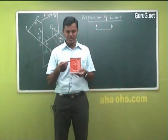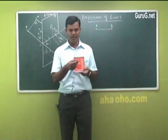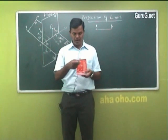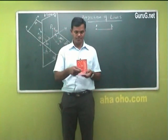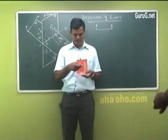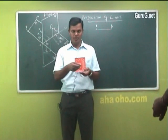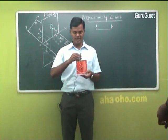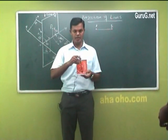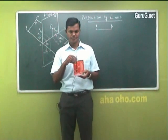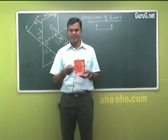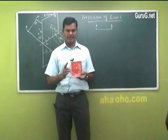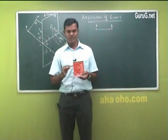Now I'll keep this pencil in this space. This pencil is perpendicular to the vertical plane but parallel to the horizontal plane. This is HP and this is VP — perpendicular to the vertical plane and parallel to the horizontal plane. Now another position: this pencil, or line, is perpendicular to the horizontal plane and parallel to the vertical plane. So a line can be parallel to one plane and perpendicular to the other, or parallel to both planes.